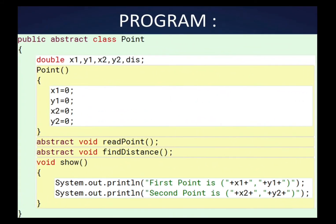Now I am writing the base class: public abstract class Point. I declare the variables first, then the constructor which initializes instance variables to zero as specified in the question. Then I declare the abstract methods with semicolons — no body, as they are incomplete. Finally, void show() displays Point 1 and Point 2 with their coordinates x1, y1 and x2, y2, ending the base class with a closing brace.